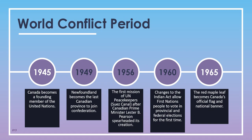In 1945, after the end of World War II, Canada became a founding member of the United Nations. In 1949, Newfoundland became the last Canadian province to join Confederation — even though Newfoundland soldiers had served in both World Wars, they were still a British colony until this point and not officially part of Canada. In 1956, the first mission of UN peacekeepers into the Suez Canal took place after Canadian Prime Minister Lester B. Pearson spearheaded its creation. In 1960, the Indian Act was changed, allowing First Nations people to finally vote in provincial and federal elections for the first time. In 1965, the red maple leaf was finally adopted as Canada's official flag and national banner.